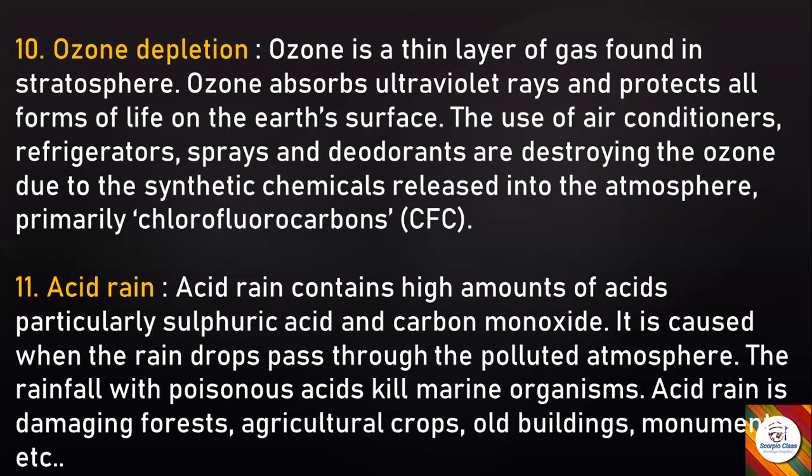Next, Acid rain: Acid rain contains high amounts of acids, particularly sulfuric acid and carbon monoxide. It is caused when the raindrops pass through the polluted atmosphere. The rainfall with poisonous acids kills marine organisms. Acid rain is damaging forests, agricultural crops, old buildings, monuments, etc.